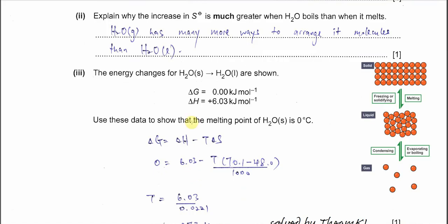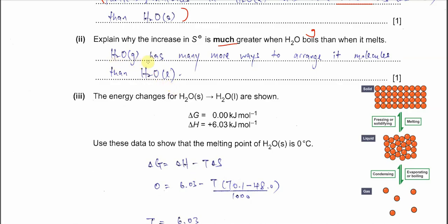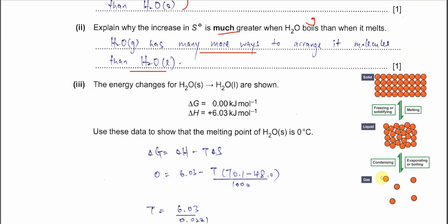Part 2: Explain why the increase in molar entropy is much greater when H2O boils, from liquid to gas. In solid, all molecules are in fixed positions because of hydrogen bonding. Liquid particles can move freely but still they are together. For gas, most of the particles are freely moved and more random. H2O gas has more ways to arrange its molecules than H2O liquid, it can go in more directions. Therefore, it's more random.